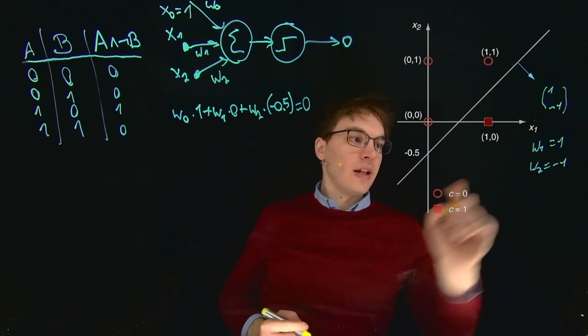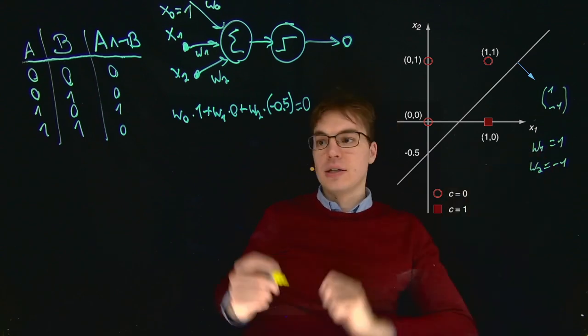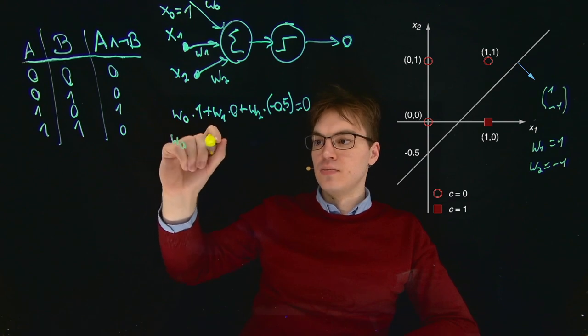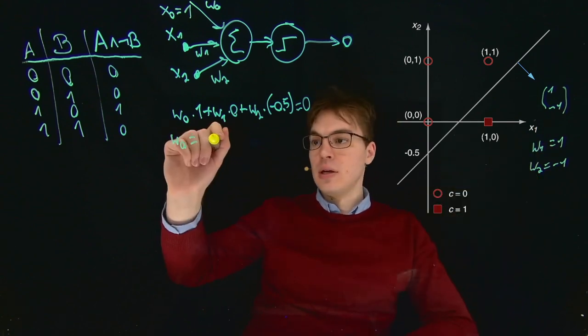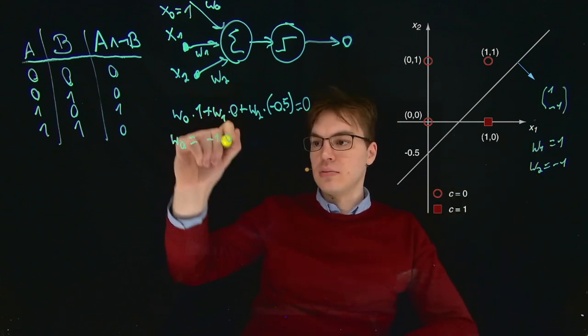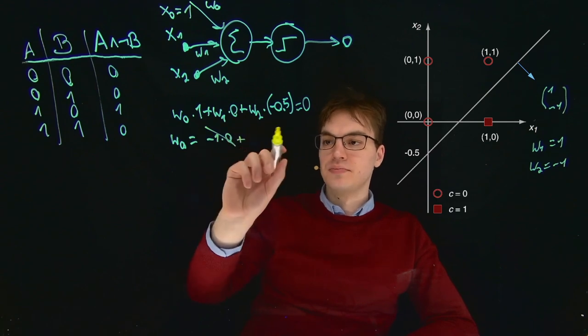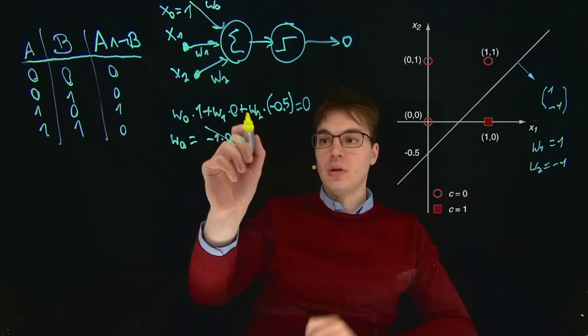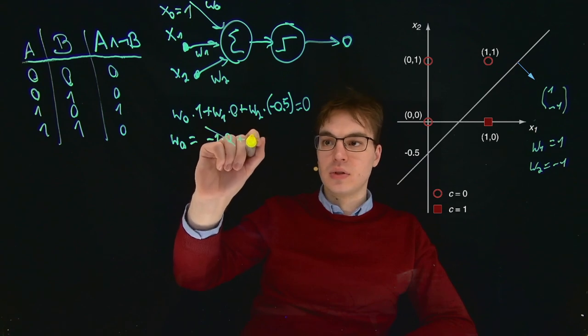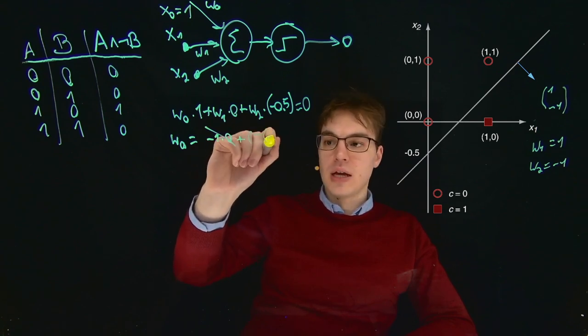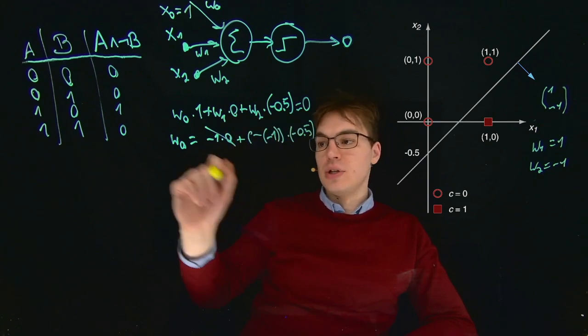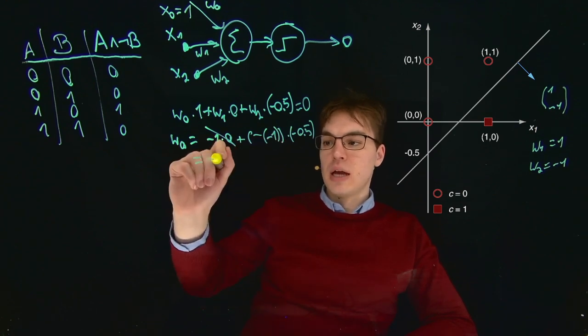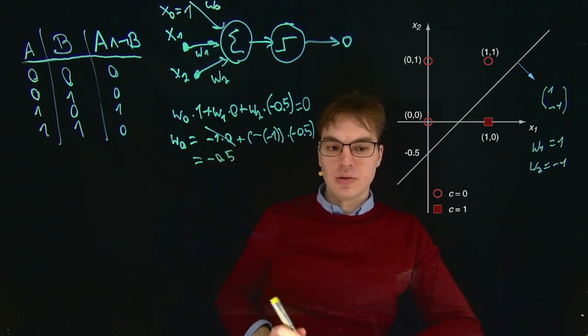We can just fill in the values that we have here, so 1 and minus 1. So we get W0, and I just pull this to the other side, equals minus 1 times 0, so 0, plus, pulling to the other side, we get minus minus 1 times minus 0.5, which is minus 0.5. So we have our W0, and this is minus 0.5.